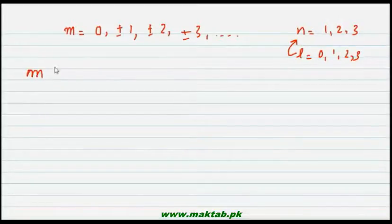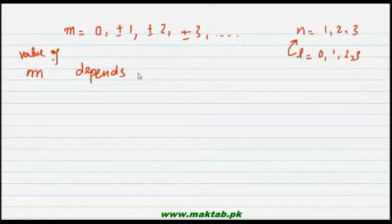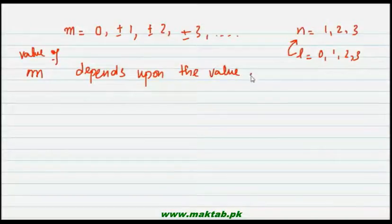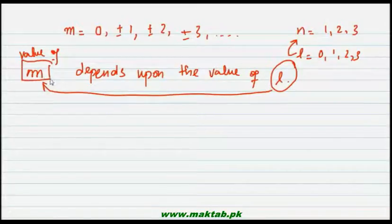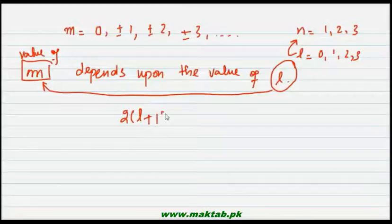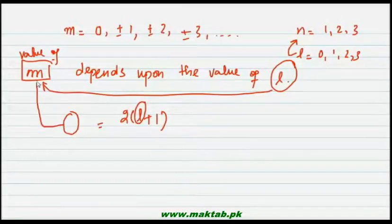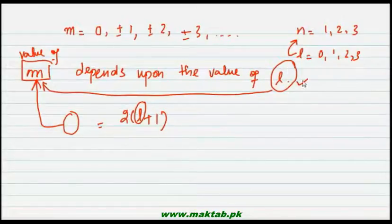The value of m depends upon the value of l, the azimuthal quantum number. The formula for the number of values of m is 2l + 1. Using this formula, we can find how many values m will have for each subshell.